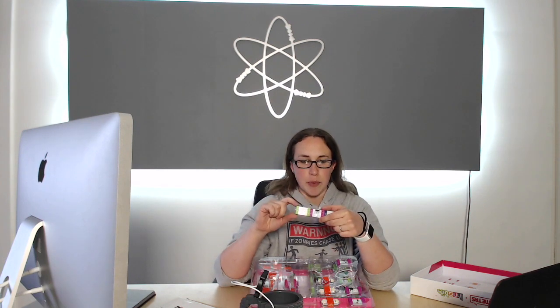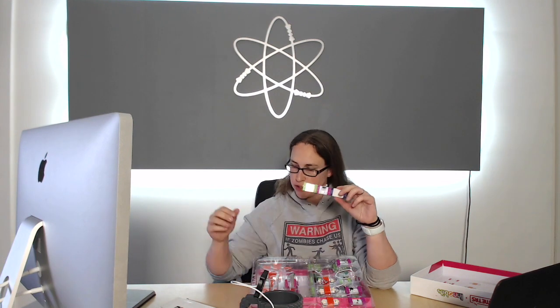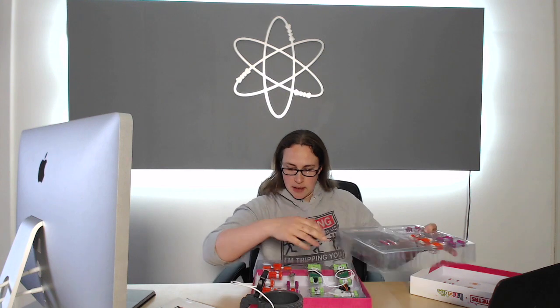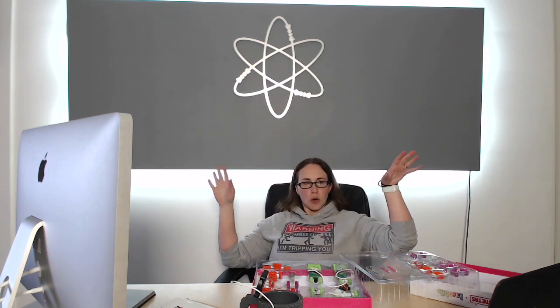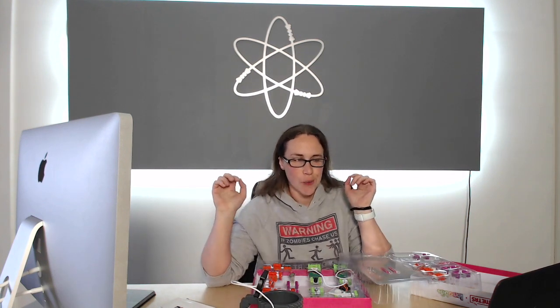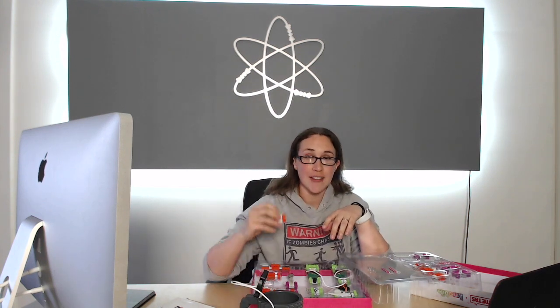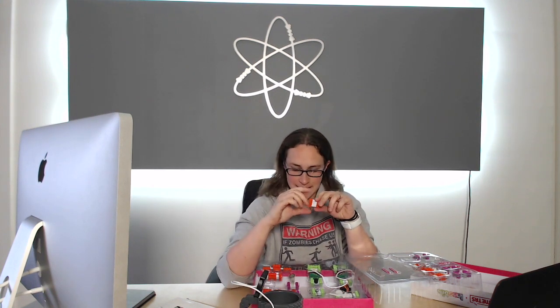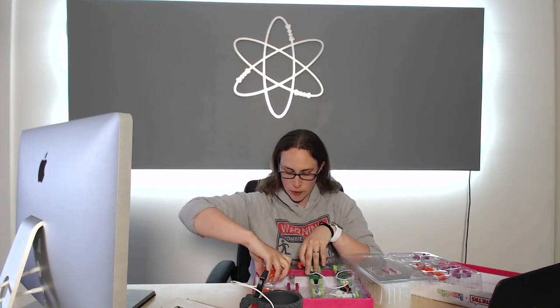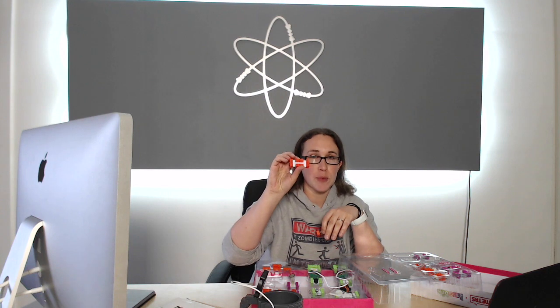So we've got input modules and output modules and the battery. Also we have the orange ones which hook together and these let us do things like branching so we can have multiple ones going off or we have inverters.